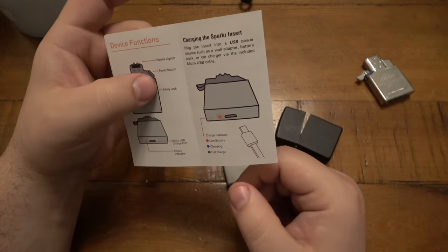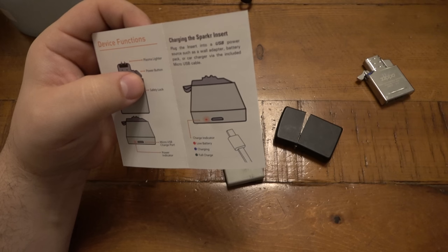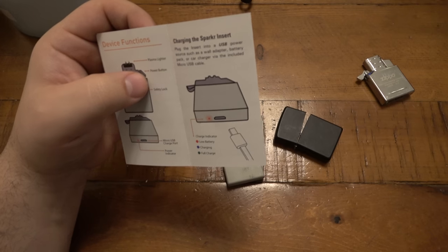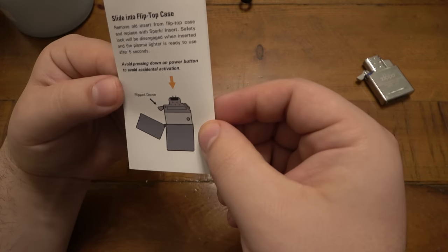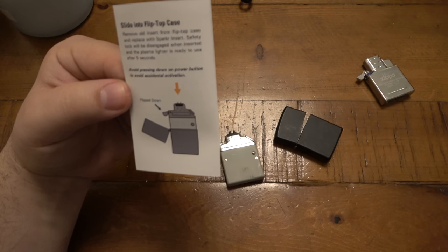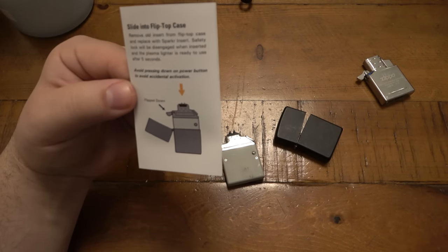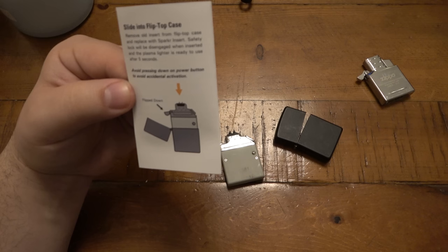But it also says safety lock. It says plug the insert into a USB power source, such as a wall adapter, battery pack, or car charger via the included micro USB cable. How is it a safety lock? Make sure it's flipped down. Remove old insert from flip top case and replace the, oh, it is Sparker, S-P-A-R-K-R, insert. Safety lock will be disengaged when inserted into the plasma lighter is ready to use after five seconds. Avoid pressing down on the power button to avoid accidental activation.